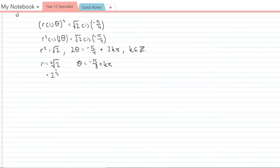So again the solutions here are going to be of the form z equals fourth root of 2 cis negative pi on 8 plus k pi.